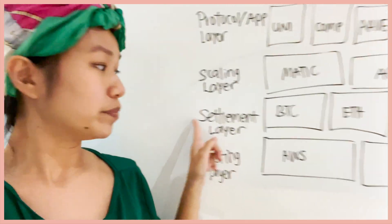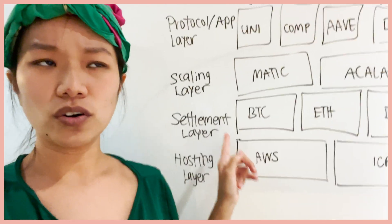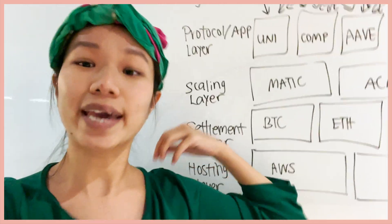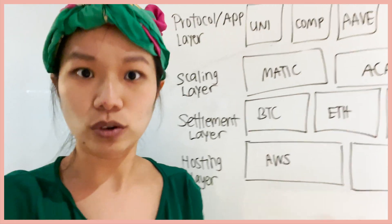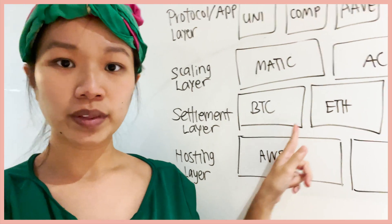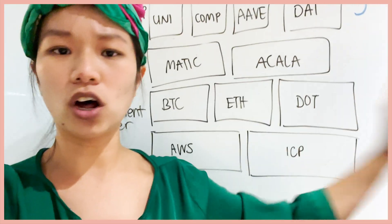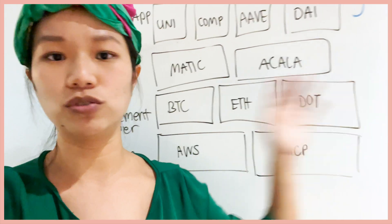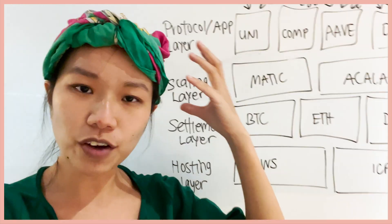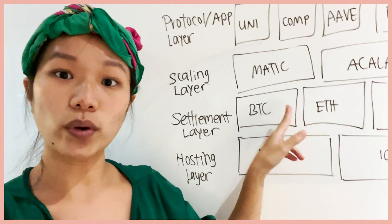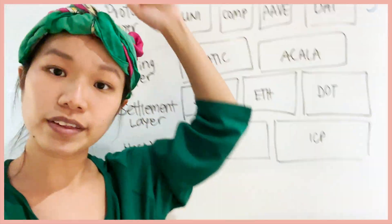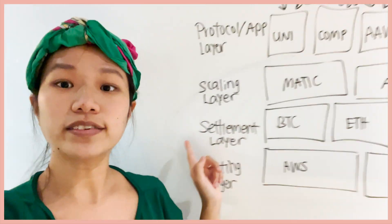Then you have the second layer — the settlement layer. You're hosting all these transactions, but who's going to account for that? Who's settling that? That's where the settlement layer comes in. In the settlement layer, we have Bitcoin, we have Ethereum, we have Polkadot — a lot of stuff in this layer. Think of it as a big accounting book. For everything going on in the Bitcoin network, it'll be settled here. Anything in the Ethereum network, settled here. Anything in the Polkadot network, settled here. That's the settlement layer.